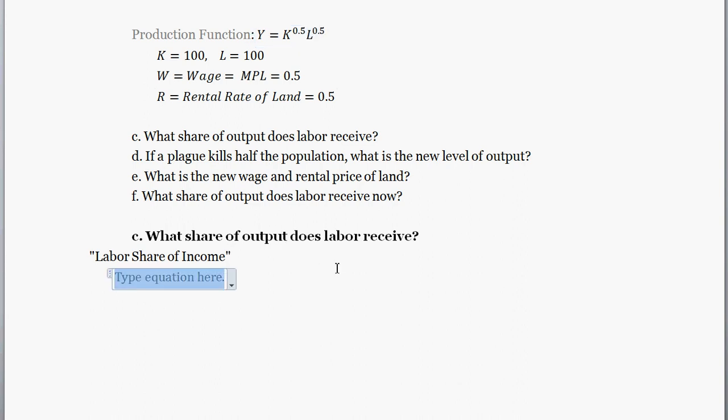Well the labor share of income, let's just do it this way, labor share of income is, there's a certain amount of income, so Y, and a portion of that income goes to labor. So we need to figure out all wages paid to all labor, and then we need to figure out what output is.